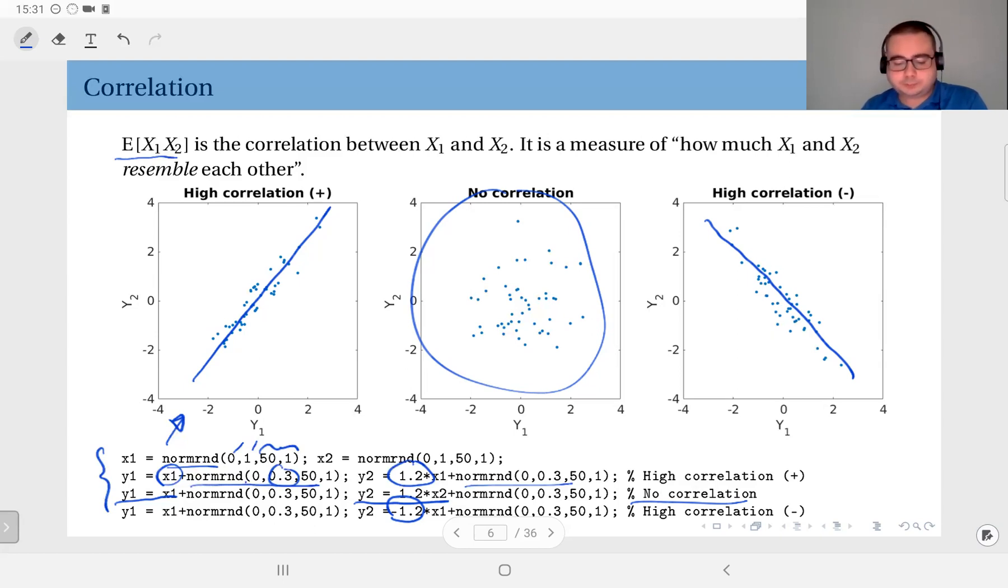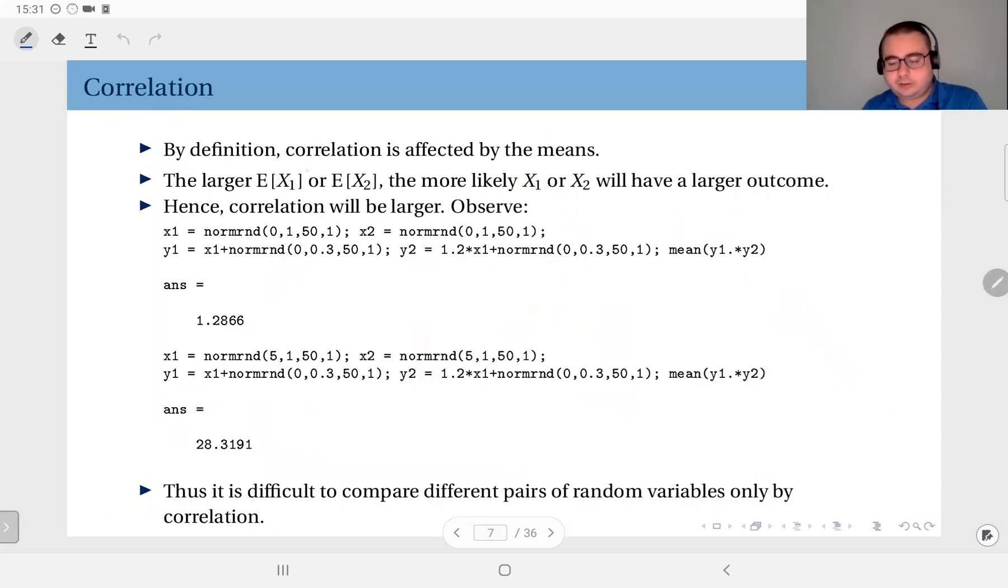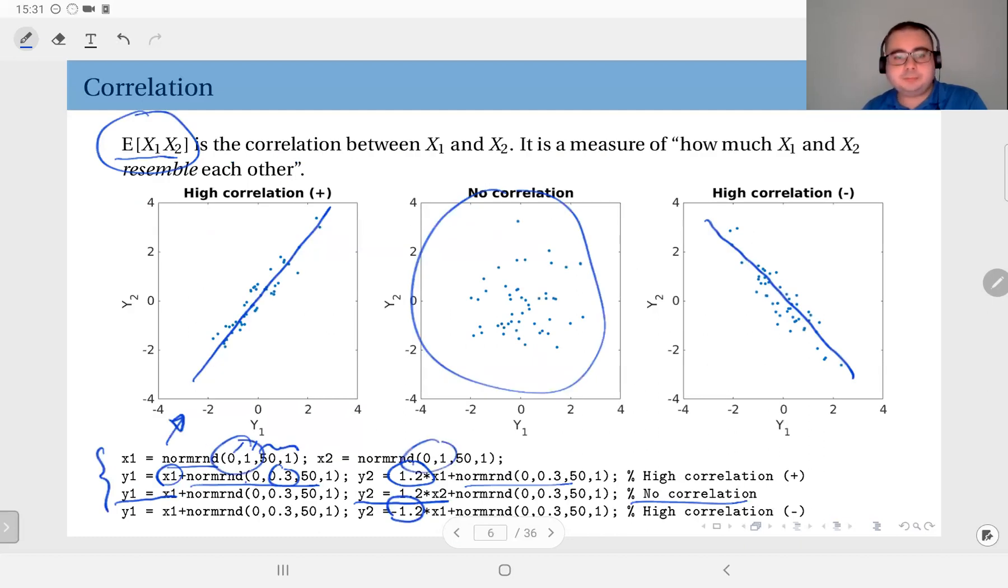But you see, this is the definition of correlation. And by this definition, correlation is affected by the mean of the distribution. How so? For instance, here I have chosen X1 and X2 to be zero mean, both of them. So if I have chosen X2 to have a mean of three, then my values would be okay.